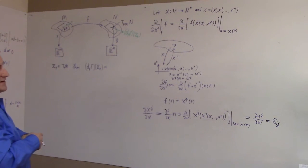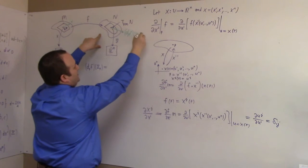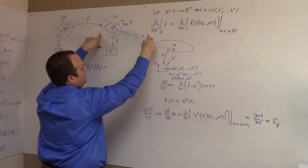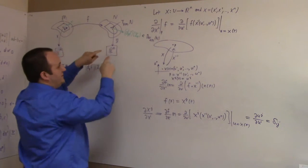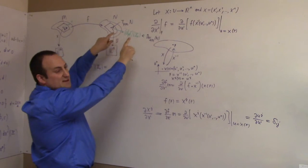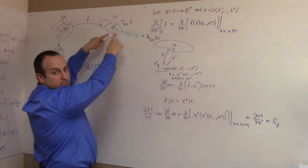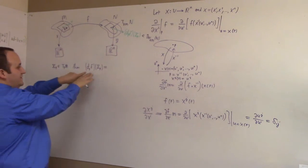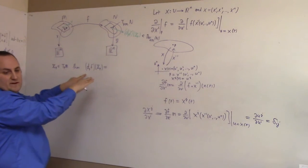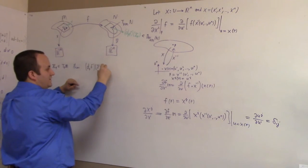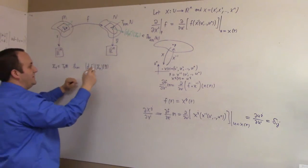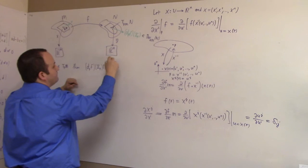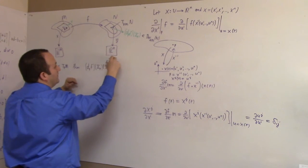To define a derivation over here, what do you need to do? This would be an element of what? The derivations at F of P of N. So to understand how this works, I have to feed it a function over here, because X is a differential operator on such functions. What I need to do is take this and feed it a g, where g is some mapping from N to the reals.